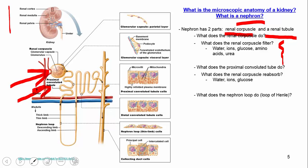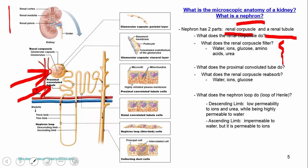Then you enter the loop of Henle. You have the descending limb on one side and the ascending limb on the other. The descending limb has very low permeability to ions and urea but is highly permeable to water, so you lose a lot of water there. The ascending limb is the opposite — not very permeable to water but very permeable to ions. Over time this creates increasing salt concentration within the loop, causing more water to leave the filtrate and be reabsorbed into the blood, helping you avoid dehydration.